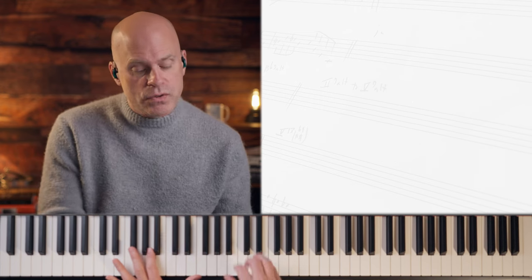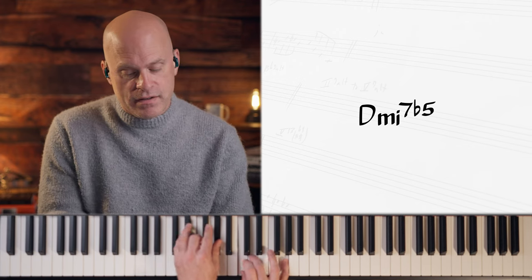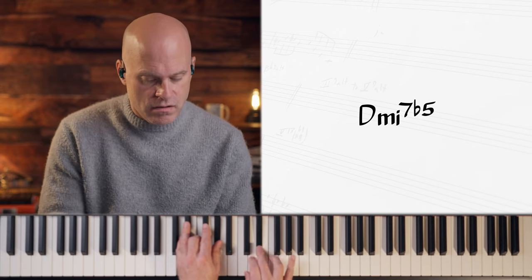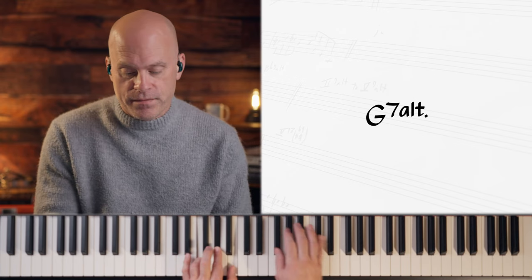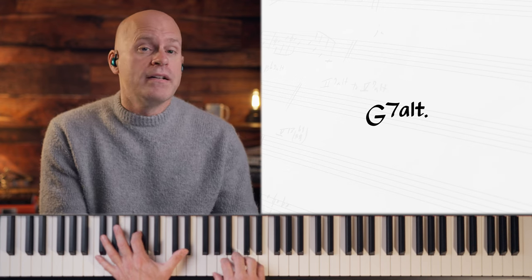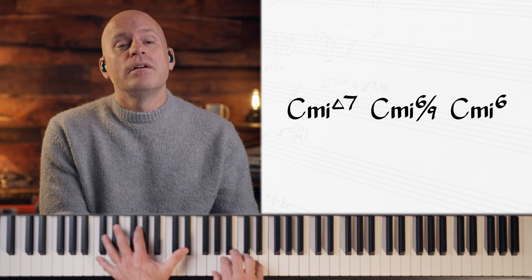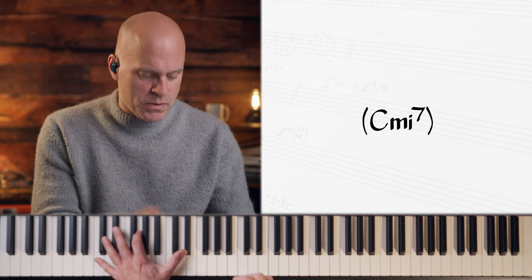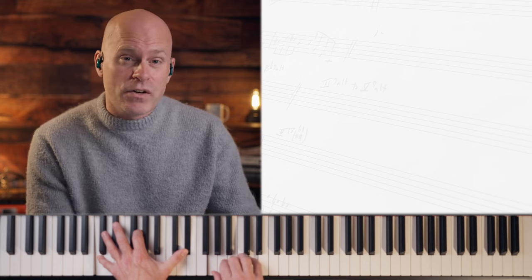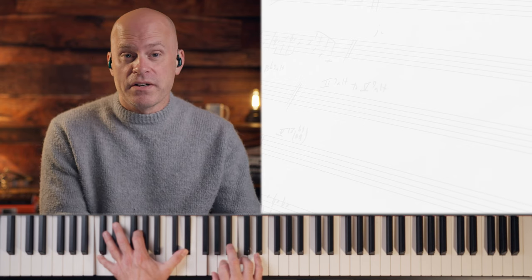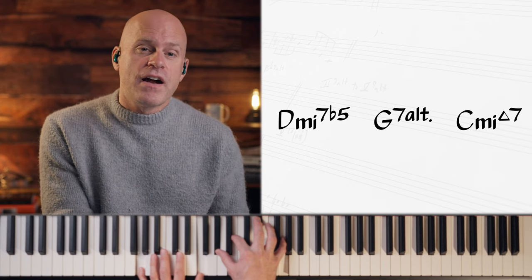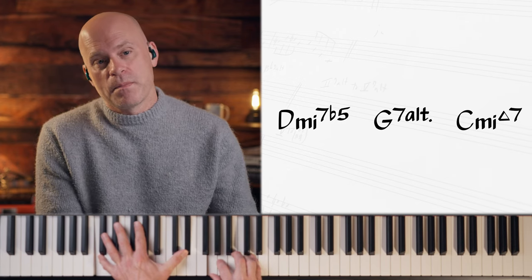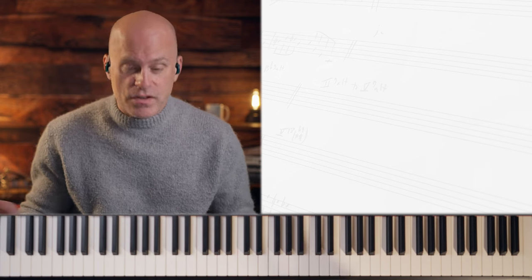In a minor key, the 2 chord is a half diminished chord. To a 5 altered chord. To a 1 minor major 7, minor 6/9, minor 6. It can be a minor 7, but in its most basic foundation form the 1 tonic chord in a minor key is minor major 7 or minor 6. 2 half diminished, 5 altered, 1 minor major 7, 1 minor 6. That's the difference.